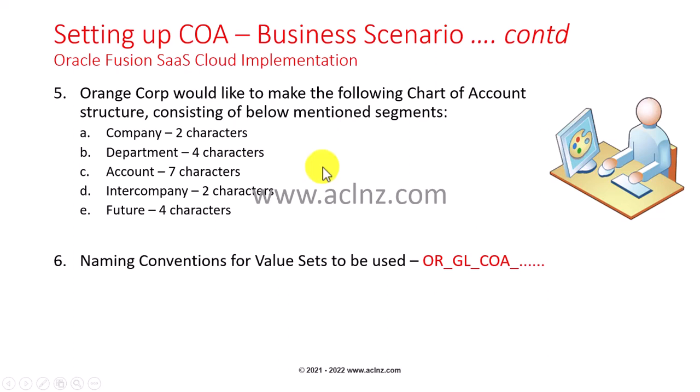The last value set or last segment is designated as 'future,' which will be four characters long. In future, if the organization decides they have a requirement to incorporate an additional segment in their chart of account structure, they can leverage this last segment. So this will make our chart of account with five segments, and hence we will be creating five value sets for our chart of account structure as part of our accounting key flex field.